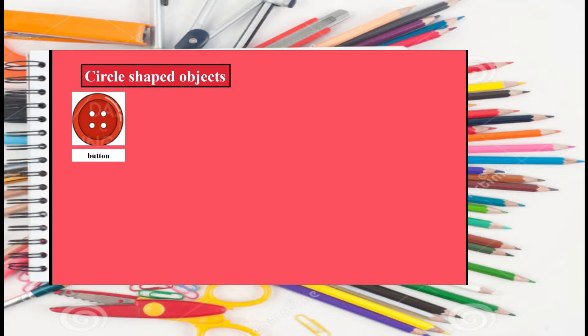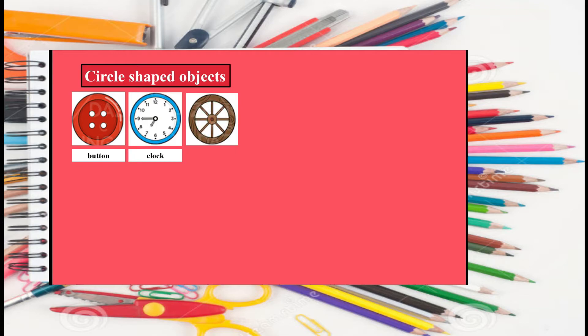Now, I will share the examples of circle shaped objects. What is this? It's a button. And what's this? It's a clock. And what's this? It's a wheel.